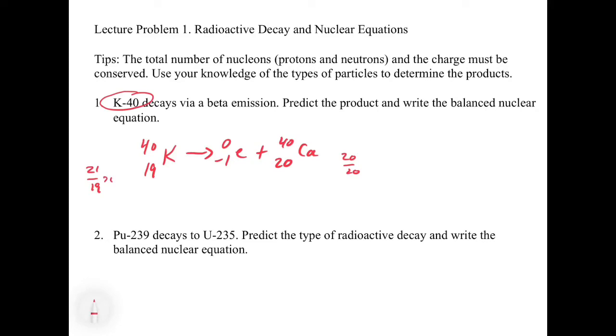That means that we had too many neutrons. So the beta emission is expected here because we convert one of those extra neutrons to a proton. Now we get back to an n-to-z ratio of 1.